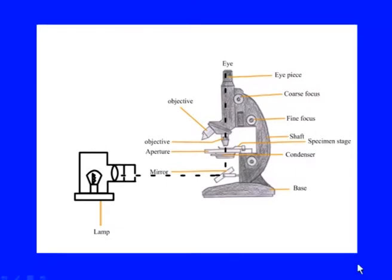The object at the specimen stage is illuminated by the condenser, and the light from the specimen passes on to the objective lens. There are two kinds of light: one not altered by the specimen, which forms the background, and one diffracted by the specimen, which is focused by the objective to form the final image at the intermediate image plane.